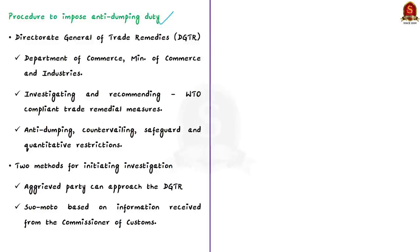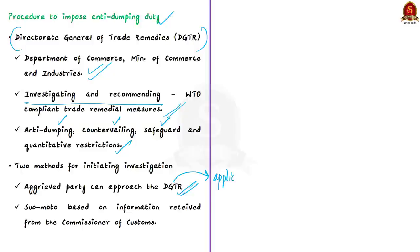The Directorate General of Trade Remedies (DGTR), under the Ministry of Commerce and Industry, is responsible for investigating and recommending WTO-compliant trade remedial measures. It deals with trade remedial measures such as anti-dumping, countervailing, safeguard, and quantitative restrictions. Any aggrieved domestic industry affected by dumping can approach the DGTR to initiate an investigation. The authority initiates investigations on the basis of an application received from the domestic industry.